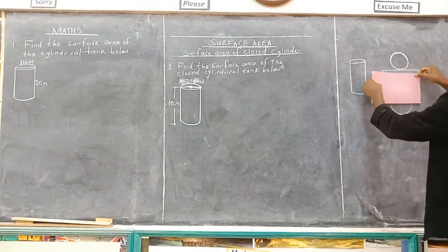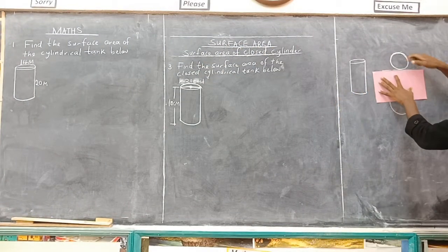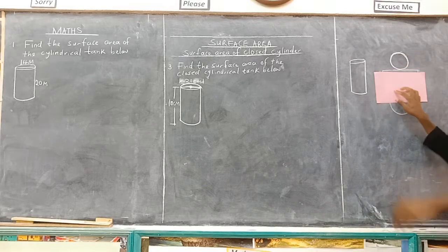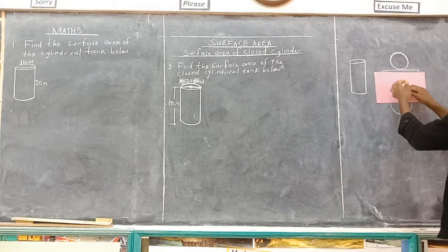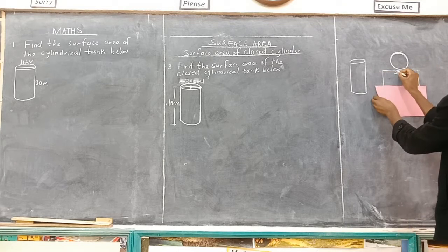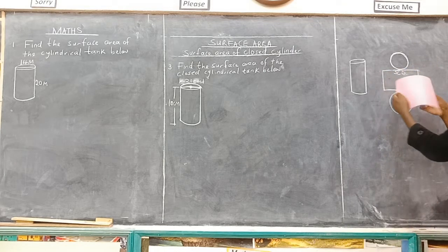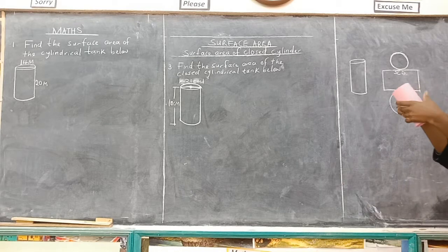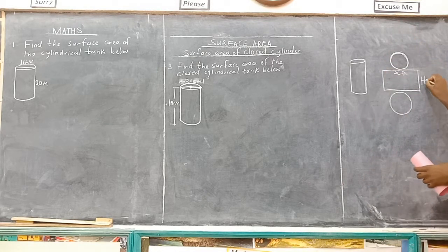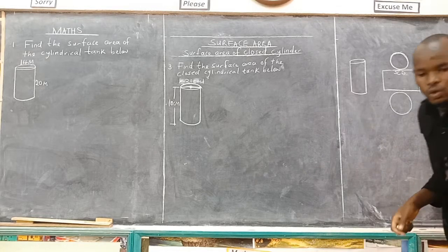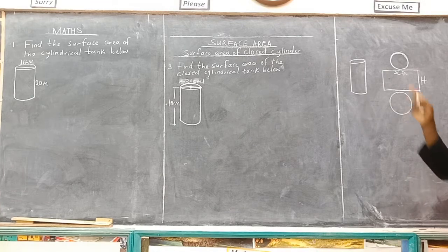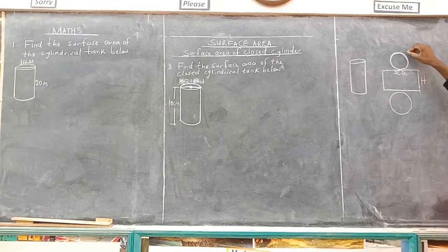This curved distance here — the circumference — is pi times diameter. Then we add the height of that container. This was the height of the container. So what is the formula we are supposed to use to get the surface area of a cylinder when it is closed? It is a closed cylinder.